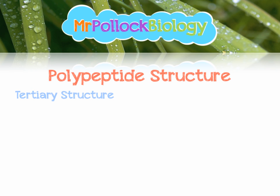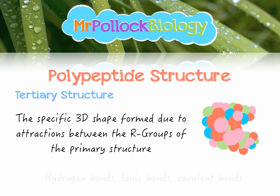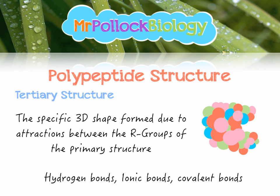Tertiary structure is the specific 3D shape formed due to the attractions between the R groups of the primary structure. The R groups attract one another in very specific ways, determining the 3D shape formed. We can get hydrogen bonds, ionic bonds, or very strong covalent bonds here. Ionic bonds form between charged R groups. Covalent bonds form between sulfur-containing R groups — these are called disulfide bridges, which are incredibly strong. Most other bonds will be broken by heating, but covalent bonds remain intact. This has come up on exam questions, so keep it in mind.